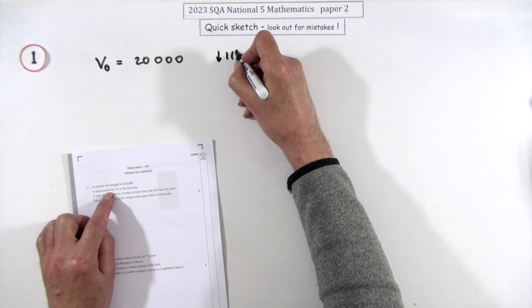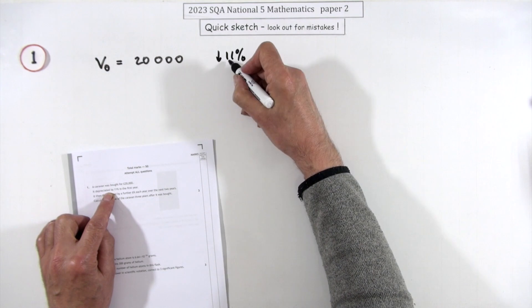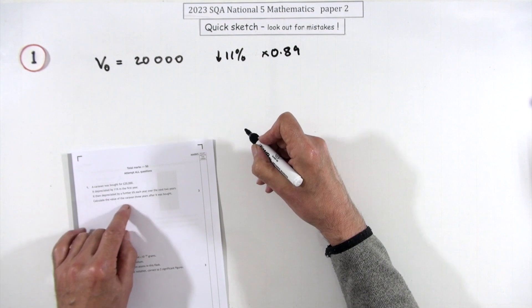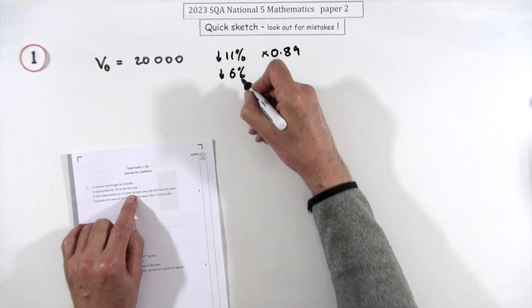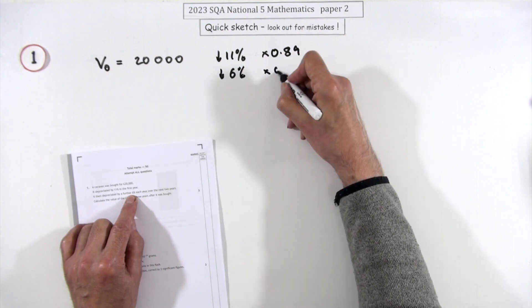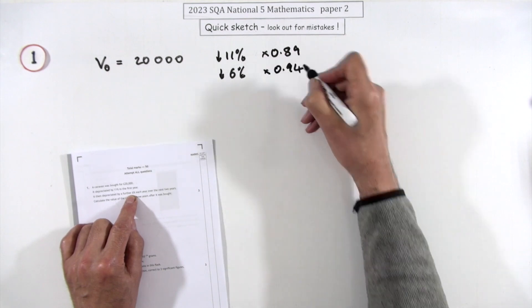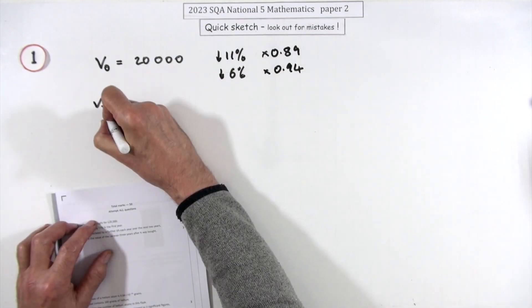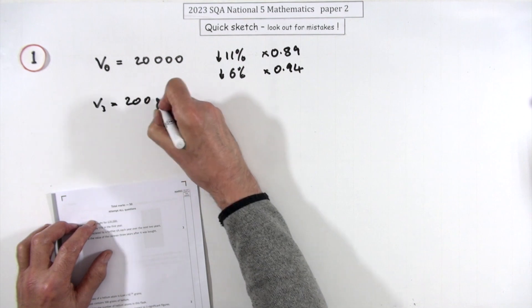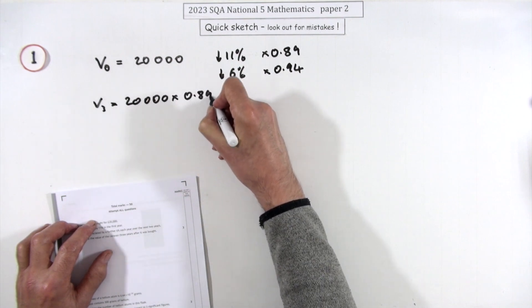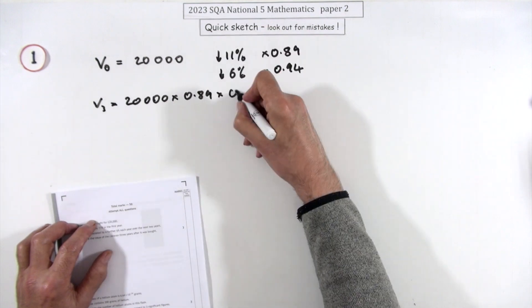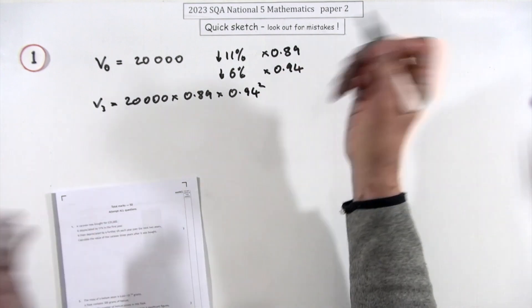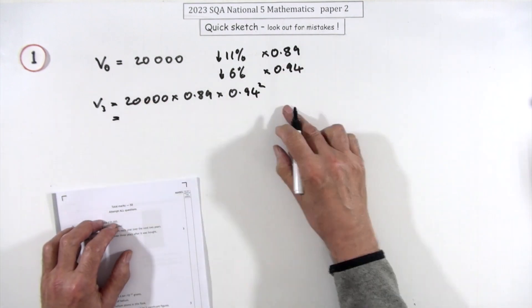If it's going down 11%, that means you're left with 89%, that would be a factor of 0.89. It now goes down another 6%. Losing 6% means you've only got 94% left, that's a factor of 0.94. What would happen if you did that once and that twice? What would its value be after three years? It'd be the 20,000 multiplied by the 0.89, that takes off 11% the first year, multiplied by 0.94, that takes off 6%.